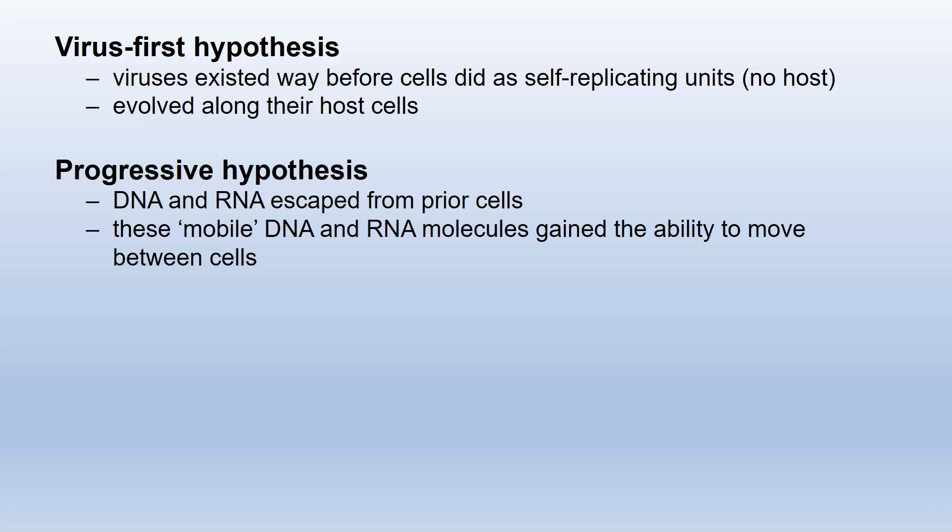They evolved in close proximity with cells and slowly lost the basic abilities to replicate on their own, becoming dependent on these hosts. The second hypothesis is known as the progressive hypothesis, in which DNA and RNA escaped from prior cells — so they originated from cells. These mobile DNA and RNA molecules then gained the ability to move between cells. What this hypothesis says is that as organisms evolved, some of their DNA and RNA left the cells — possibly through cell death — and gained the ability to infect other cells and hijack them to make more copies before escaping and infecting other cells.